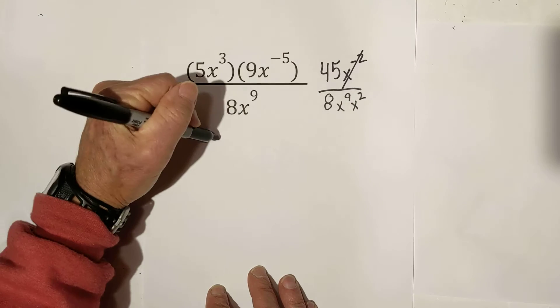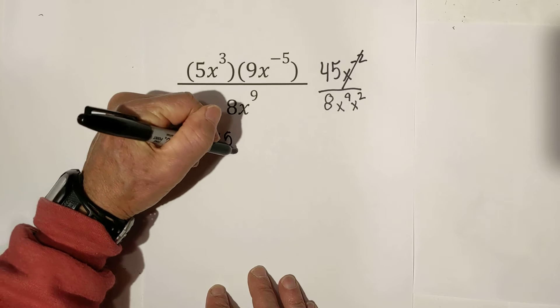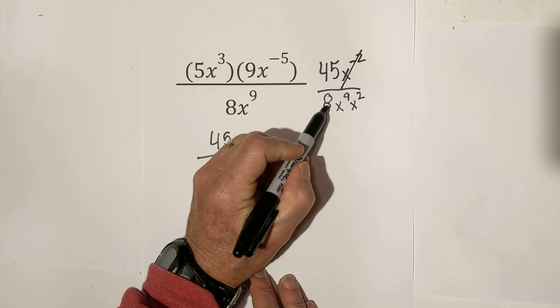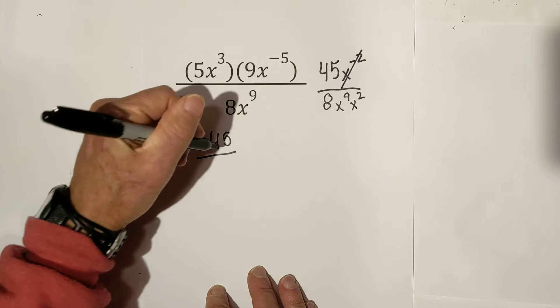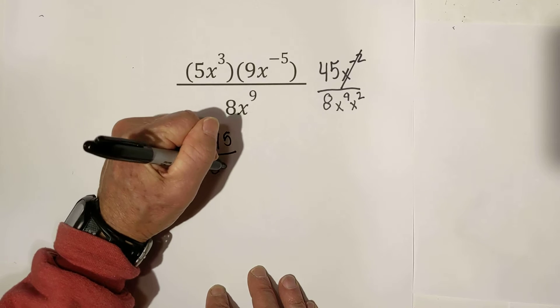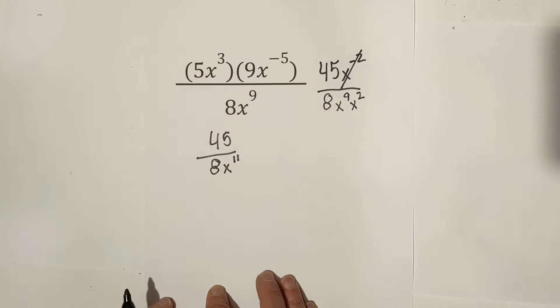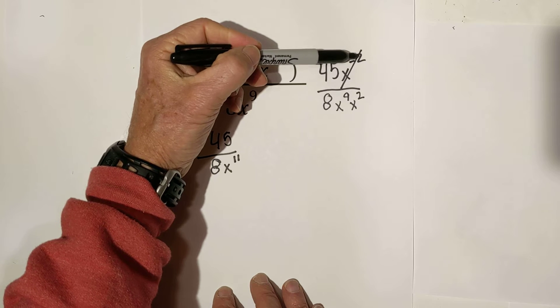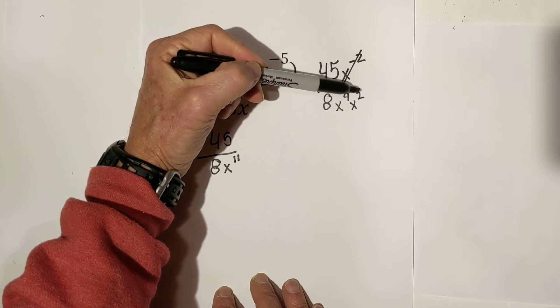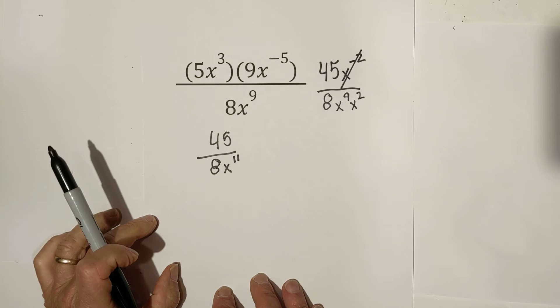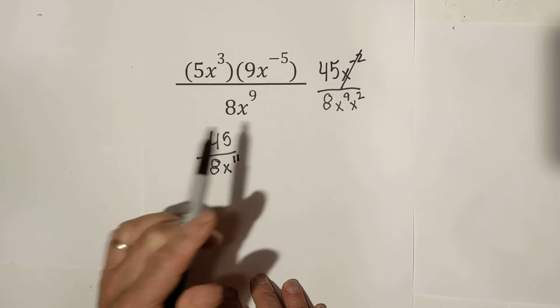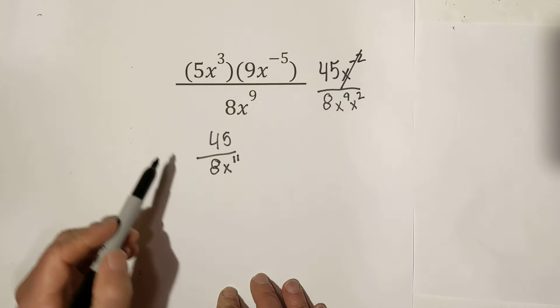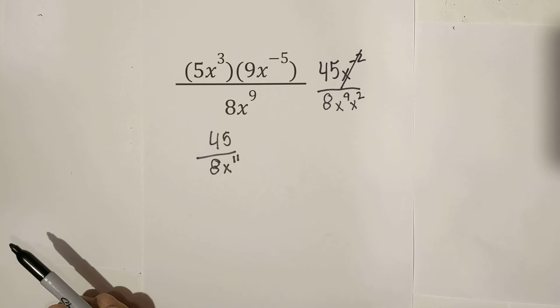This becomes, let me rewrite it, 45 over 8, and then we have 9 plus 2 is 11, so it will be 8x to the 11th. Again, we had to move this negative exponent to the bottom in order for it to become a positive. And then we added the 9 and the 2. That gave us the 11th. Let's work another example.